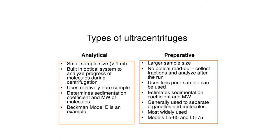Analytical ultracentrifugation is mainly used for analysis of a small sample size and has built-in optical systems to analyze the progress of molecules during centrifugation. It uses relatively pure samples, requires pre-treatment, determines the sedimentation coefficient and molecular weight of molecules. The Beckman model is an example. Preparative ultracentrifugation is used for large sample sizes, has no optical readout — fractions are collected and analyzed after the run — and less pure samples can be used. It does not require pre-treatment and is used to separate organelles and molecules. Widely used models are L565 and L575.